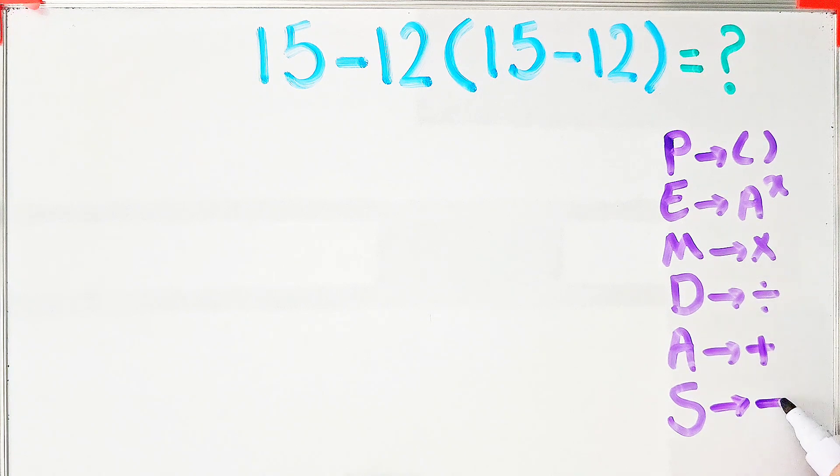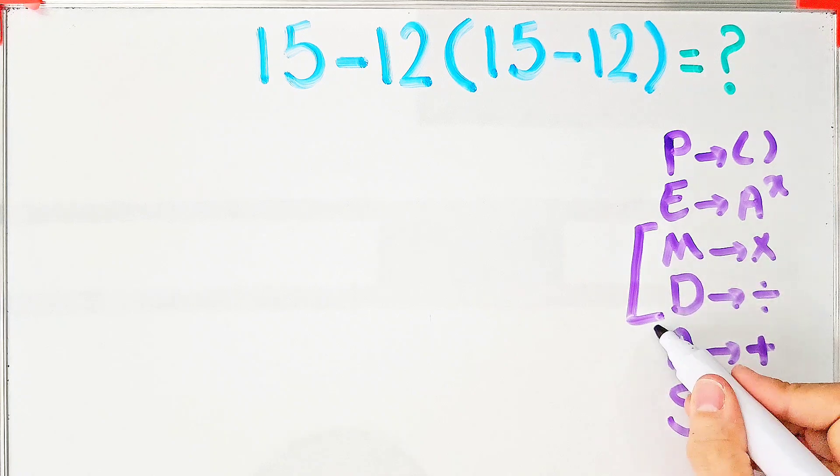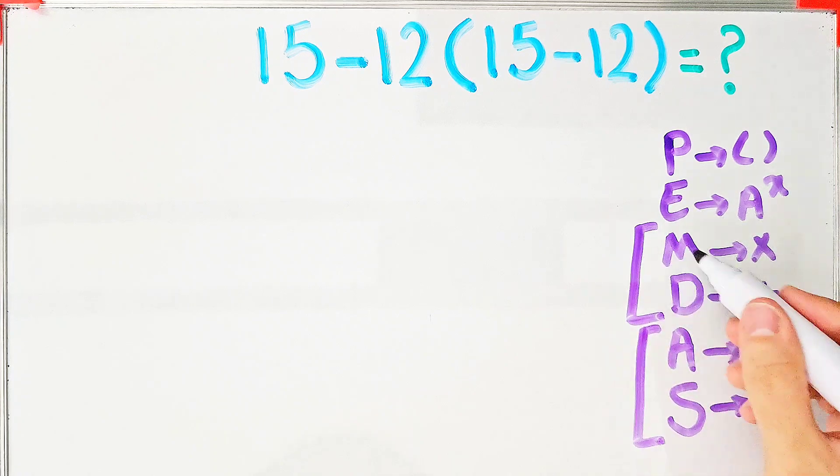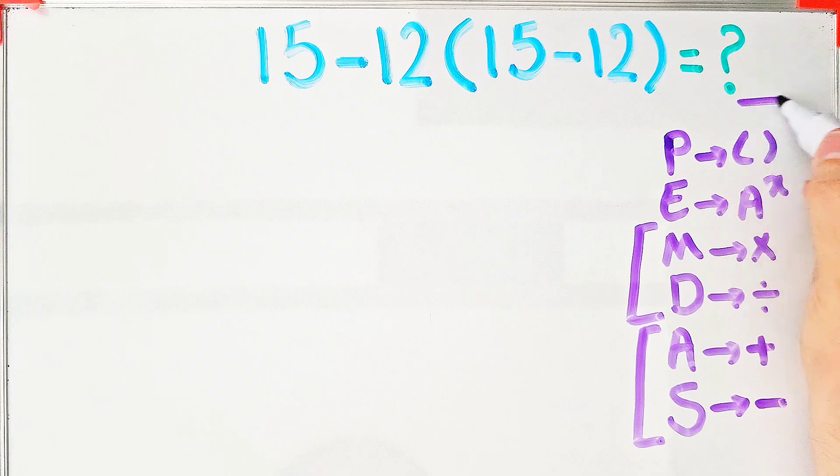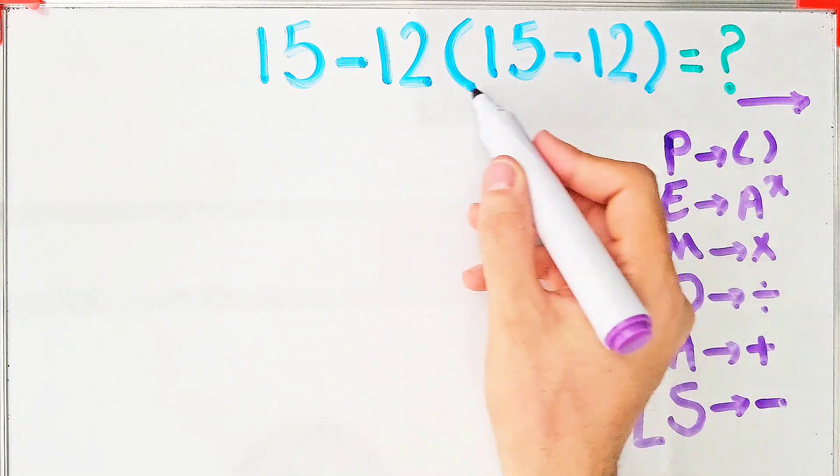Multiplication and division have the same level of priority. Also, addition and subtraction have the same priority. When we have both in an expression, we start from the left and simplify the question.